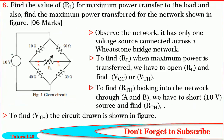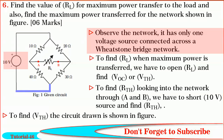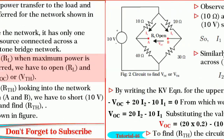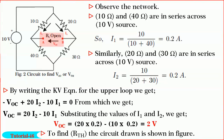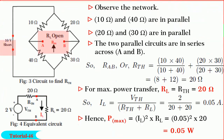Friends, finally let us solve the problem on maximum power transfer theorem to find RL when maximum power is transferred across it, and also to find the value of maximum power transferred. Observe the network — it has only one voltage source connected across a Wheatstone bridge network. To find RL when maximum power is transferred, we have to open RL and find VOC or V-Thevenin. Looking into the network through A and B, we short the 10 volt source and find R-Thevenin.